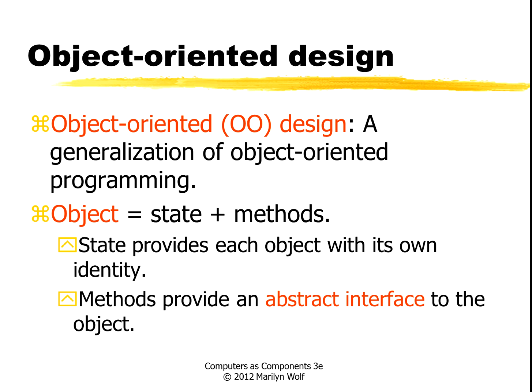So now we can tell somebody: when you want to use this object, use these methods. You don't have to worry about what goes on inside. The methods will hide that from you. And if we want to change the details of the object — how it's organized, how it's built — we can do that without you having to change your code. That abstraction is very important for portability, for maintainability, and also for usability.